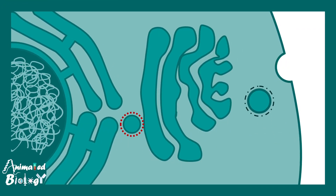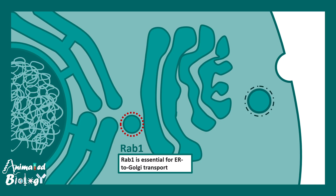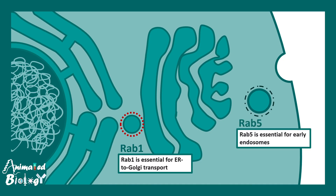To give a specific example: any vesicle that is bound from ER to Golgi requires RAB1 for targeting. In contrast, any vesicle coming from an endocytotic vesicle and becoming an early endosome uses RAB5 as the key RAB. Each different type of vesicle or intracellular component has its own RABs, though there can be some overlap alongside the specificity.